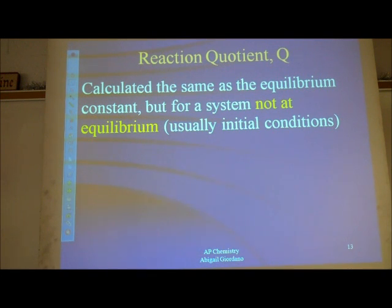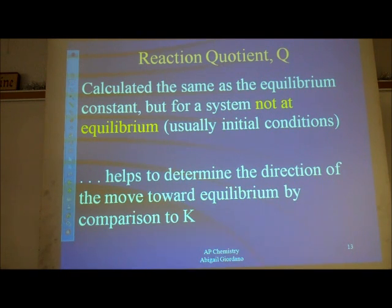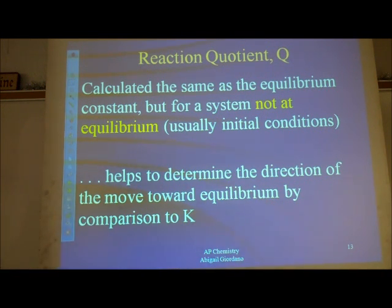It doesn't have to be initial conditions to be plugged into a Q calculation — it just has to be not at equilibrium, but initial conditions are typical. Q is a very helpful number because I can compare it to the value of K, the equilibrium constant. Depending on whether Q is less than K, greater than K, or equal to K, that tells me which direction the reaction needs to move in order to get to equilibrium.